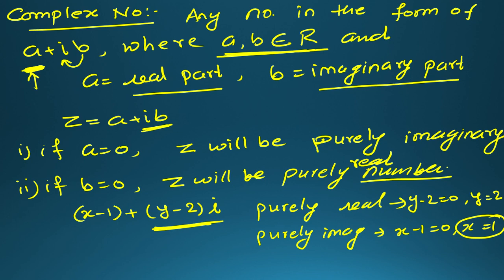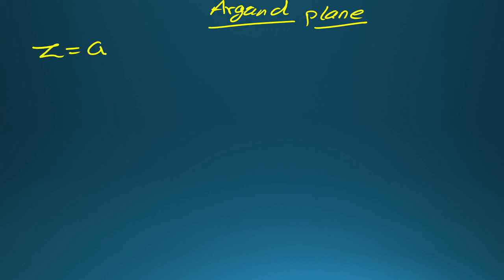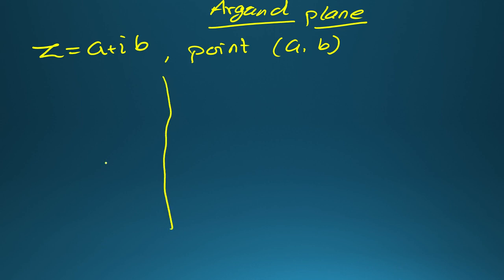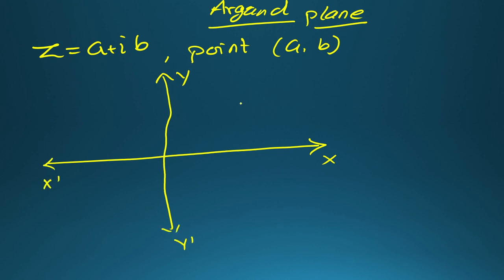Now another topic is the Argand plane. I told you that imaginary numbers cannot be drawn on a real number line. But just for study purposes, if z equals a plus ib is any complex number, we consider the point (a, b) representing z. Since a and b are real numbers, we can plot them on a graph. The x-axis and y-axis form the plane, and this type of graph used for complex numbers is called the Argand plane.